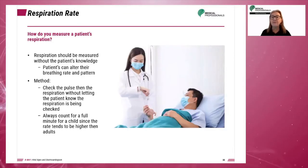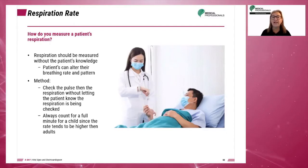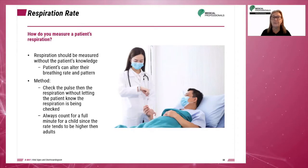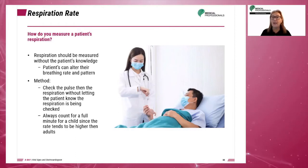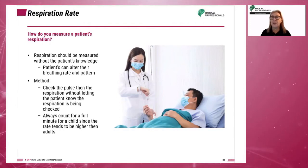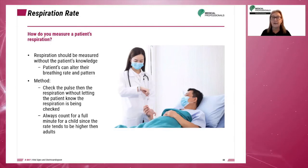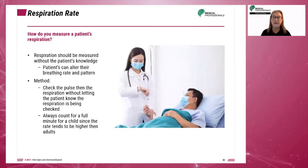Respiration should be measured without the patient's knowledge because a patient can alter their breathing rate and pattern. The method is to check the pulse, then check respiration without letting the patient know. Always count for a full minute for a child since the rate tends to be higher than that of adults.